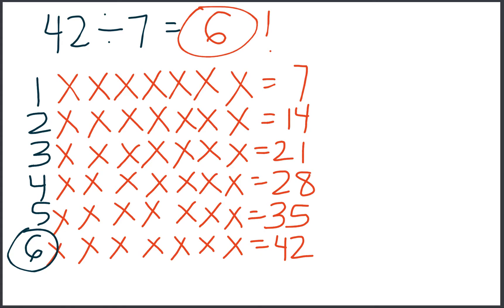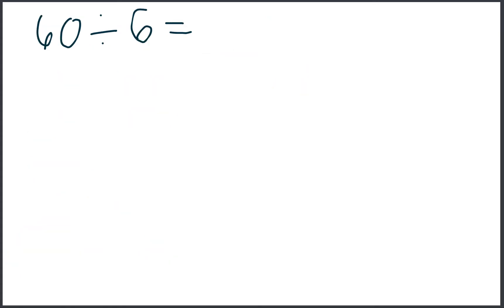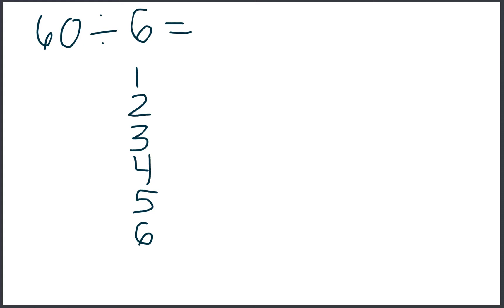Let's do one more. This time I'm going to switch up the strategy a little bit. It will still give us the same answer, but it's a different method for solving it. Still with the array, so we are still going to draw those x's. But instead we're taking 60 and dividing it into 6 rows. So I'm going to start by writing 1, 2, 3, 4, 5, 6. And what we're going to do is put 1 x in each row until we reach 60.